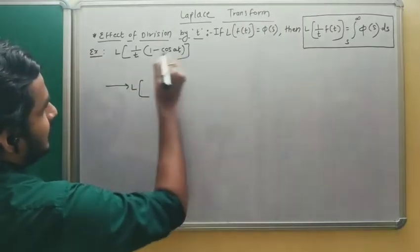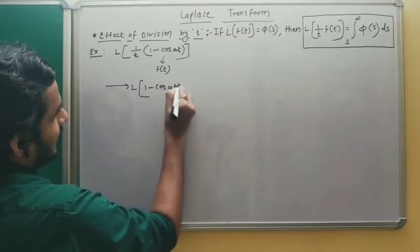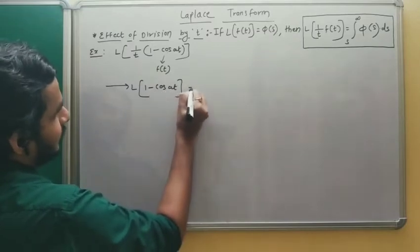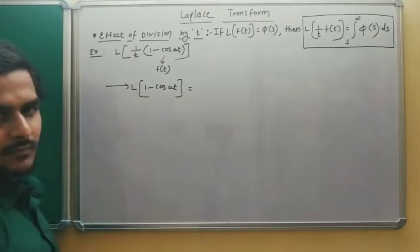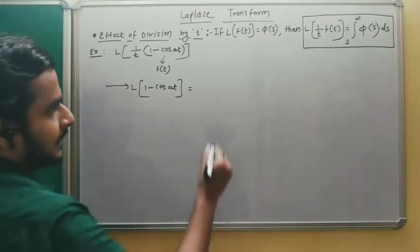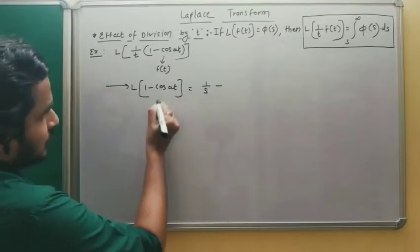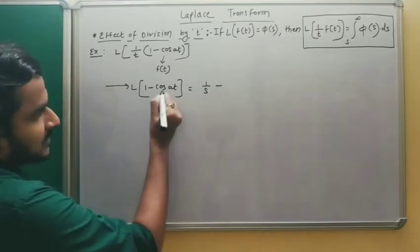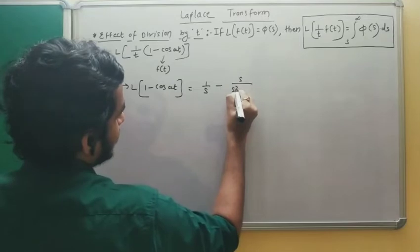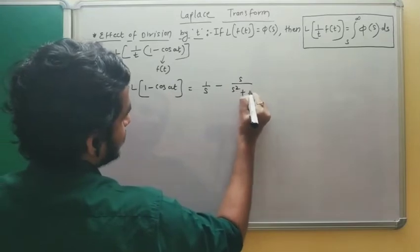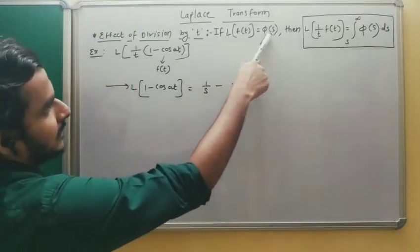So φ(s) = L{f(t)} = L{1 − cos(at)} = 1/s − s/(s² + a²). You know the formula: Laplace transform of 1 is 1/s, and Laplace transform of cos(at) is s/(s² + a²). This result is φ(s).